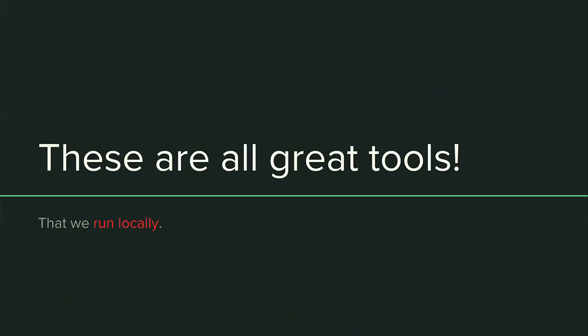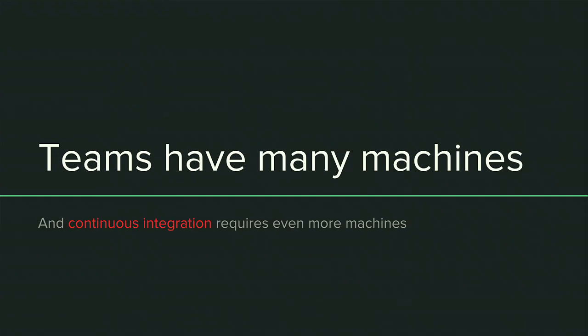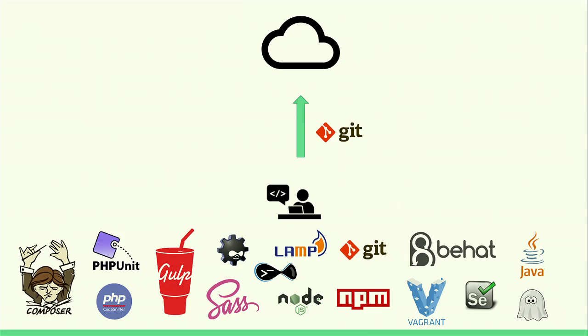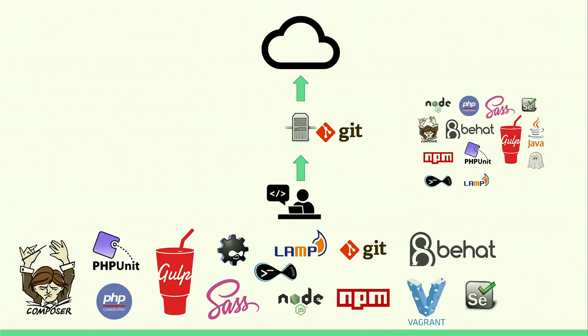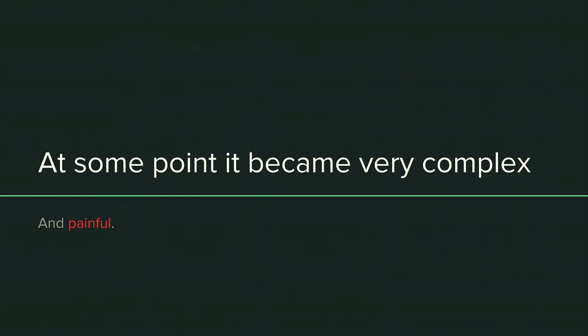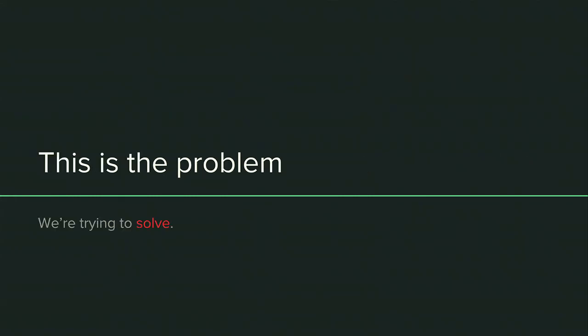And we're just talking locally right now — just one person's machine can have all this stuff. But if you have a team, everyone's got to install it, and everyone's machine is a little different, and you have to worry about different versions of things on different machines. Onboarding can be a nightmare. What if you have a CI process? If there's an intermediary server, you have to push from your machine to GitHub, then GitHub runs some CI process — that CI machine has to have all this stuff too. So this has clearly gotten out of hand. At some point it became really complex, and it became painful, and this is the problem we're trying to solve.